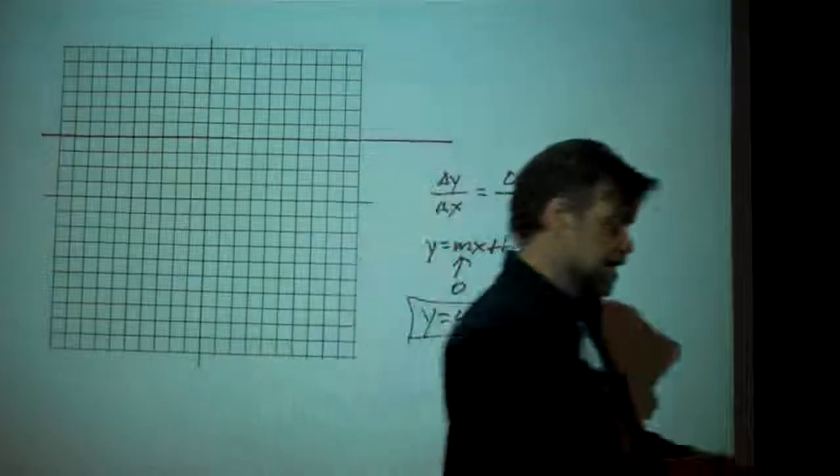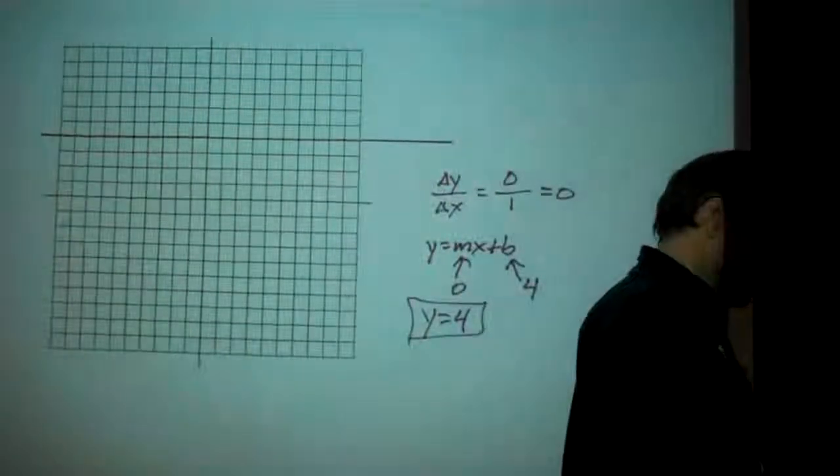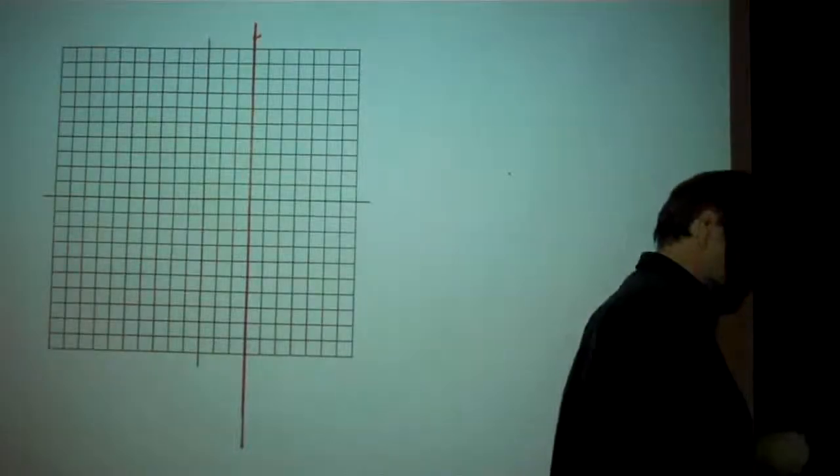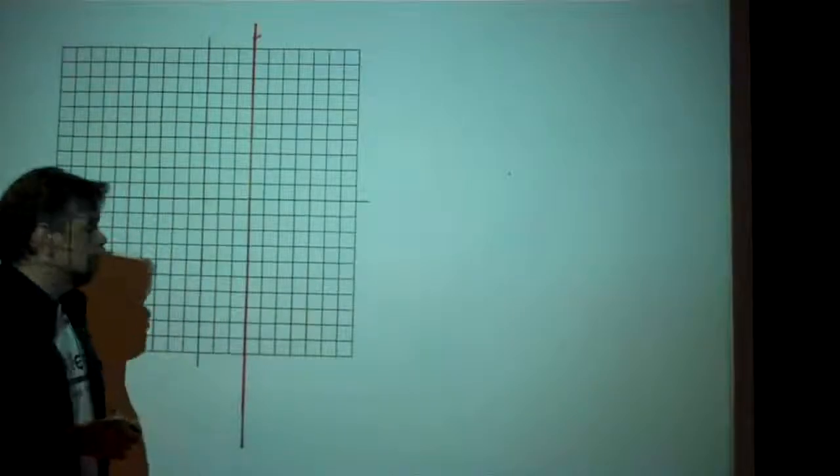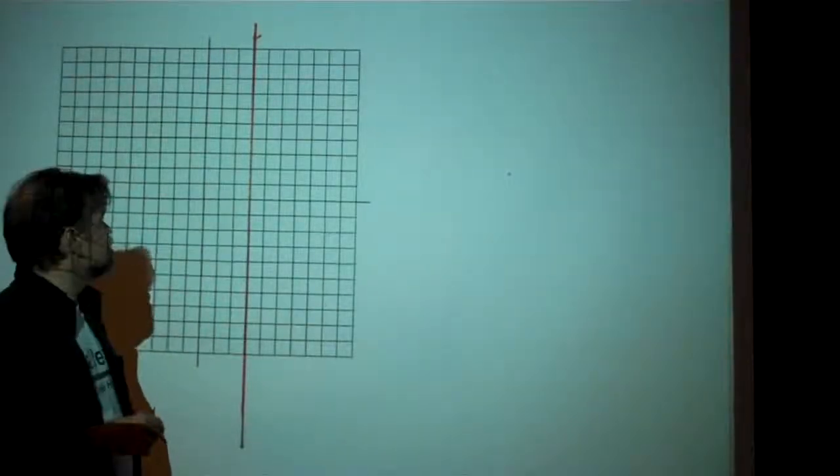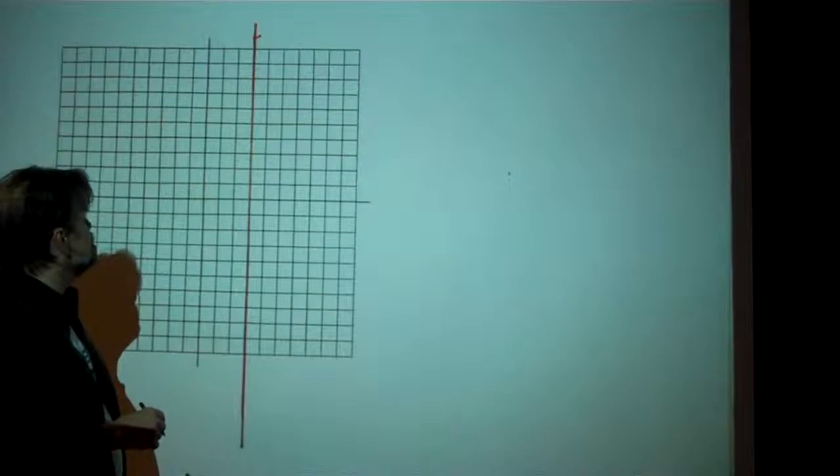Now let's look at vertical lines. With a vertical line like this one, well, first off, it's a little difficult to find the y-intercept because there is no y-intercept.